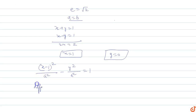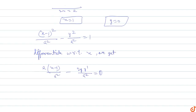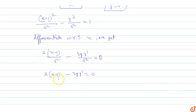Differentiating with respect to x, we get: 2(x - 1) / a² - 2y·y' / a² = 0. Multiplying both sides by a², this becomes 2(x - 1) - 2y·y₁ = 0. Canceling the factor of 2, we get y·y₁ = x - 1.